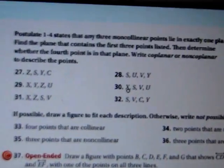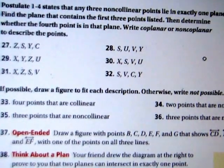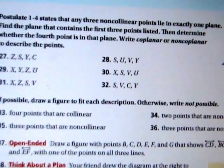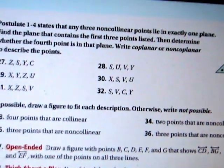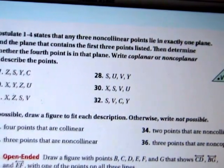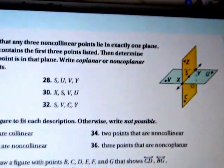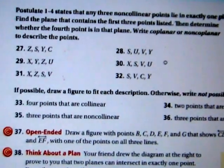30. X, S, V, and U. So first we need X. Here's X, here's S, here's V. So X, S, and V are on this plane here. U is over here. So that's the same plane. So we would write coplanar for number 30.